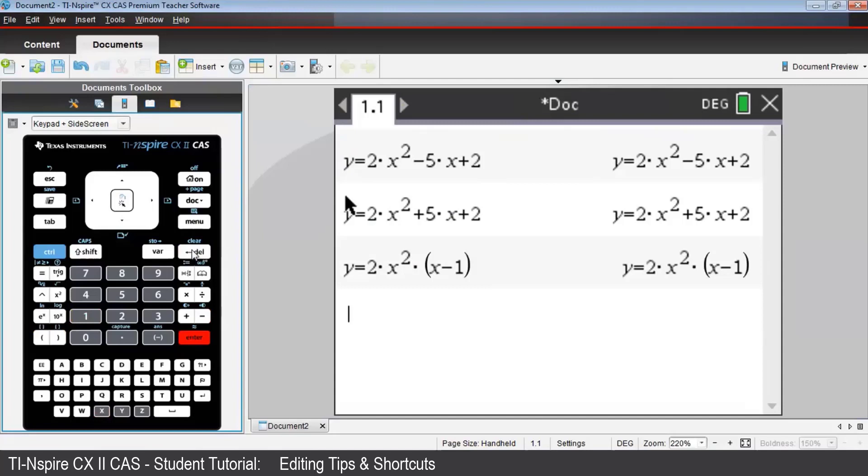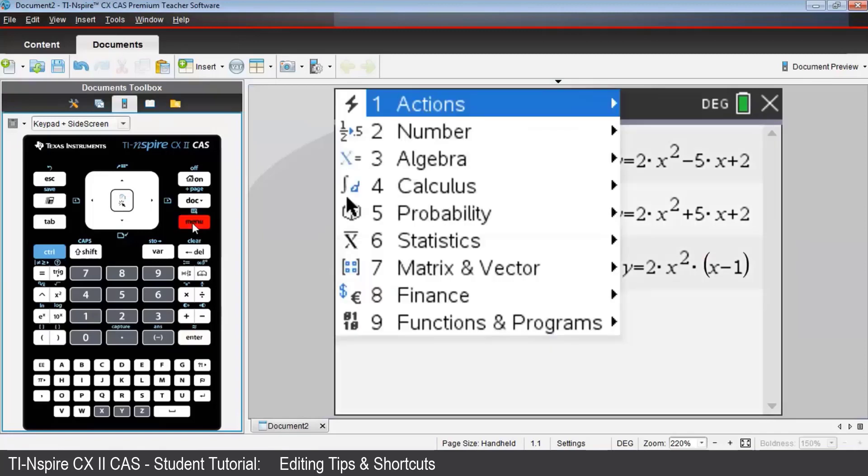Now suppose you want to find the x coordinates for the point or points one of these quadratic relations has in common with the linear relation y equals 4 minus 2x. We'll first press Menu, then Algebra, then Solve.